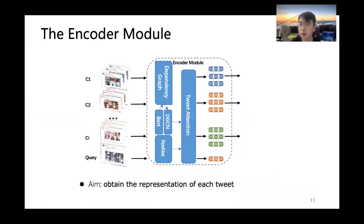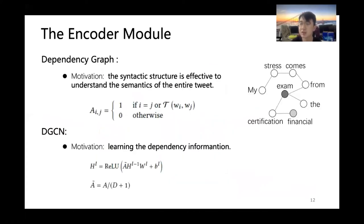The aim of encoder module is to obtain the representation of each tweet. We employ BERT and ResNet to get the basic text and image representation of each tweet. The existing lexicon-based stress category detection methods focused on the meaning of the words in the dictionary rather than the semantics of the entire tweet. The syntactic structure is effective to understand the semantics of the entire tweet.